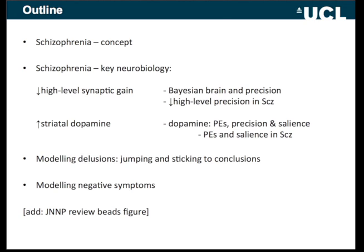One of these, as Carl mentioned yesterday, is this idea of a loss of synaptic gain at high levels in the cortical hierarchy. And another is an increase in striatal dopamine. I'm going to talk about the idea of precision and how precision might relate to synaptic gain, and the various roles put forward for dopamine and how these might implicate theories of schizophrenia.